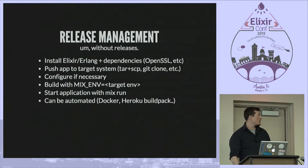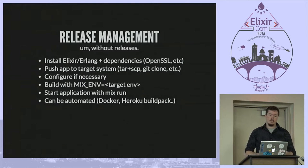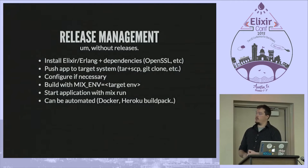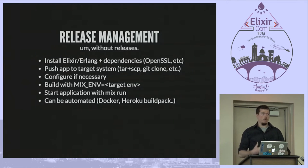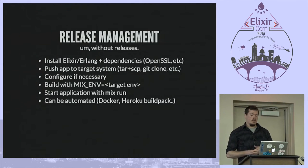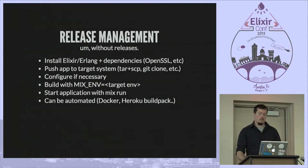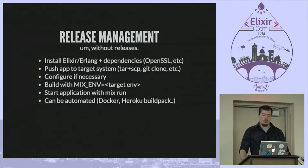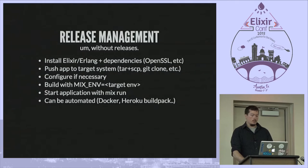Release management without releases — this is probably what most of you are doing today. On your production box, you have to install Elixir and Erlang and potentially other dependencies such as OpenSSL if you're using the crypto application. You have to find a way to deploy your code to the target system — tarring up your project, git cloning it. You configure it and then start it up with Mix Run.